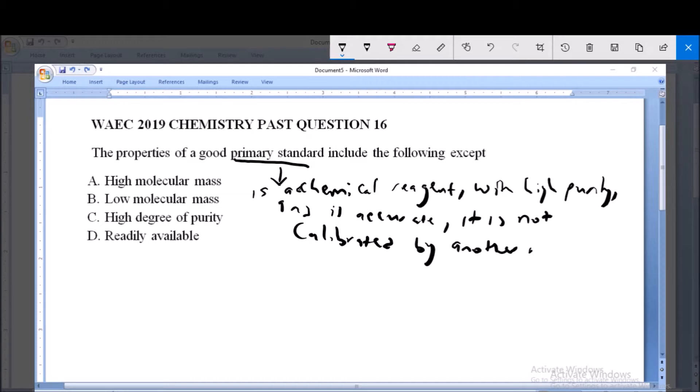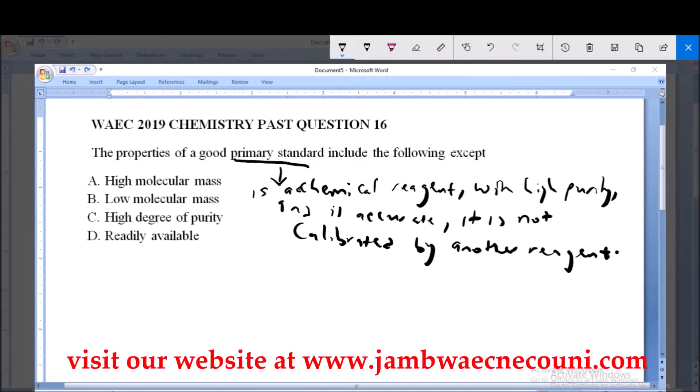Now what are the properties of a good primary standard? We will look at the options and define each of them one after the other in order to see how each of them affects a primary standard.